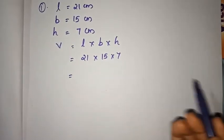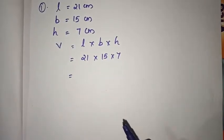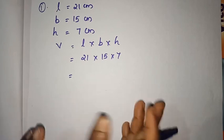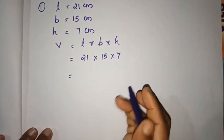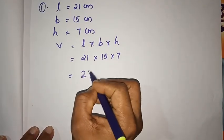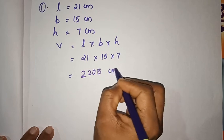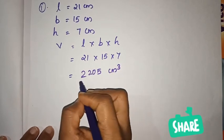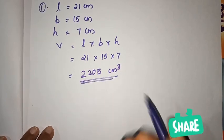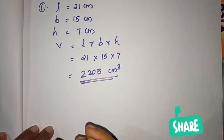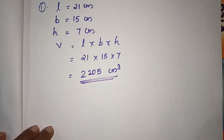If you want to multiply these three numbers together: 21 × 15 × 7 gives us 2,205 cm³. That is the volume of the brick.